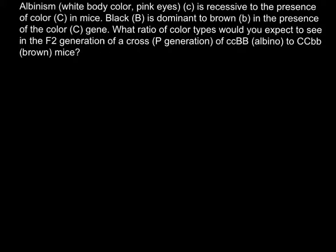Here is the problem: albinism — white body color, pink eyes — that is small c, is recessive to the presence of color (capital C) in mice. Black (capital B) is dominant to brown (small b) in the presence of the color capital C gene. What ratio of color types would you expect to see in the F2 generation of a cross where the parent generation is small c small c capital B capital B (albino) crossed to capital C capital C small b small b (brown mice)?